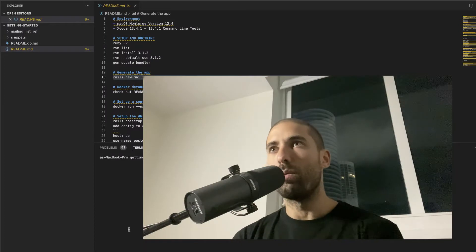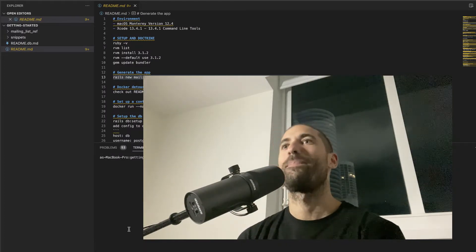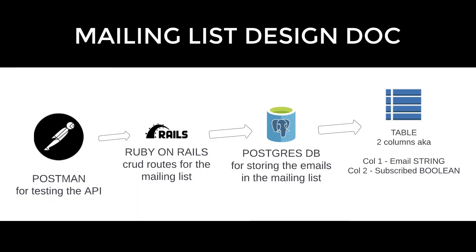Now, let's jump into building this app. We will be building an API for a very simple mailing list. This API will expose CRUD routes for one model, and the data for this model will be stored in a PostgreSQL table with two columns: one column for emails and another column for whether or not each email is subscribed to the mailing list.